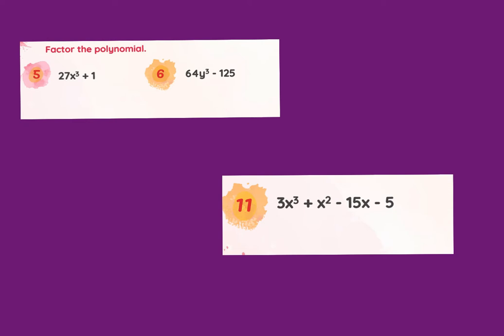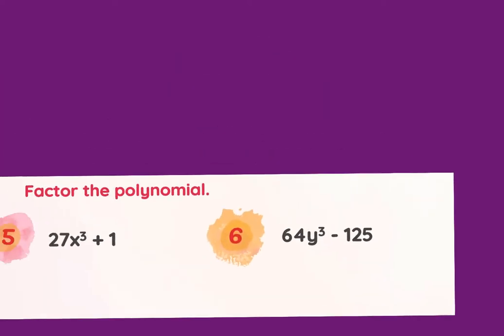On Friday we added to our types of factoring. Before Friday we had done greatest common factor, difference of two squares, and perfect square trinomial. On Friday we added perfect cubes and factoring by grouping.